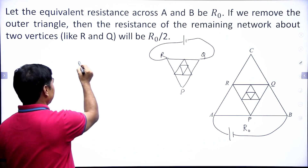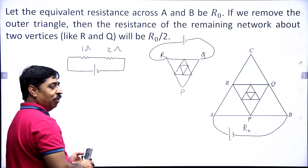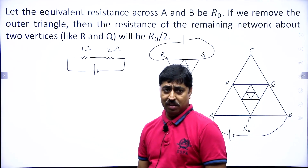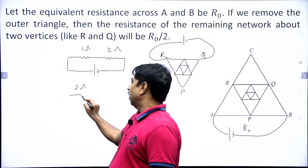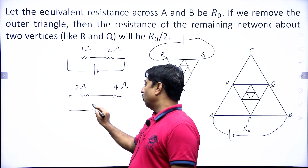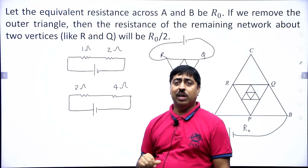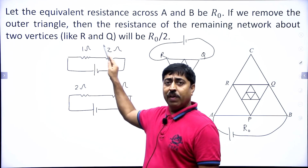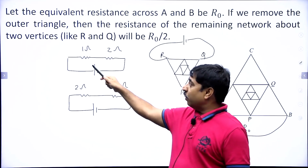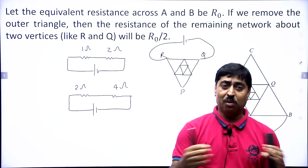Let me draw a simple circuit. Say there are two resistances, 1 ohm and 2 ohm — the equivalent is 3 ohm. If I double each and every resistance to 2 ohm and 4 ohm, the equivalent resistance just doubles to 6 ohm. Similarly, if you half every resistance the equivalent halves. If you triple every resistance the equivalent becomes 3 times. This is true for any circuit, however complex.